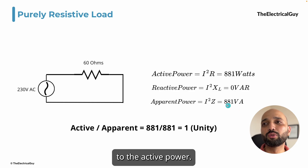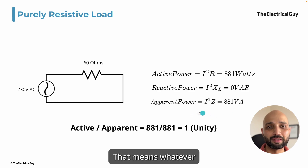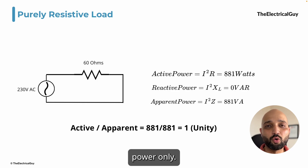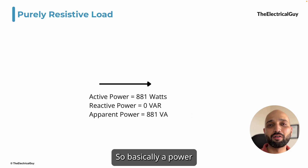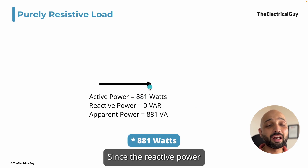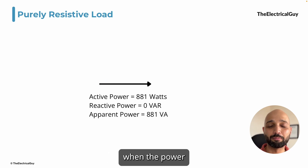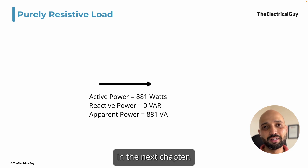The apparent power is therefore identical to the active power, and the power factor is said to be unity. That means whatever apparent power you consume from the grid is all active power, with zero reactive power. When you draw the power triangle for this type of load it is a straight line — active power is 181 watts, reactive power is zero, and apparent power is the same straight line. This is the ideal, not practical, scenario.